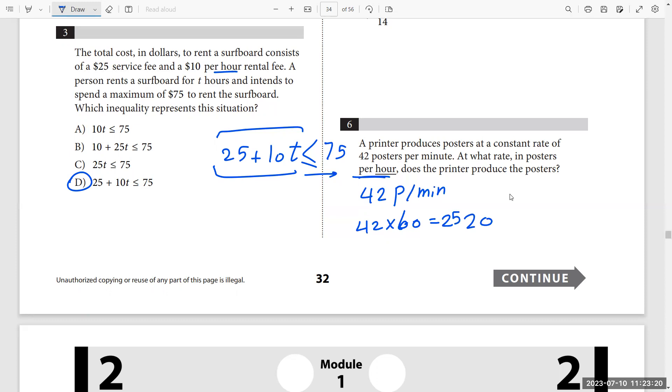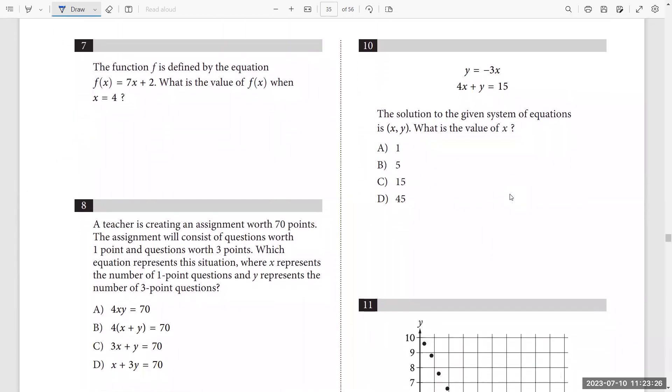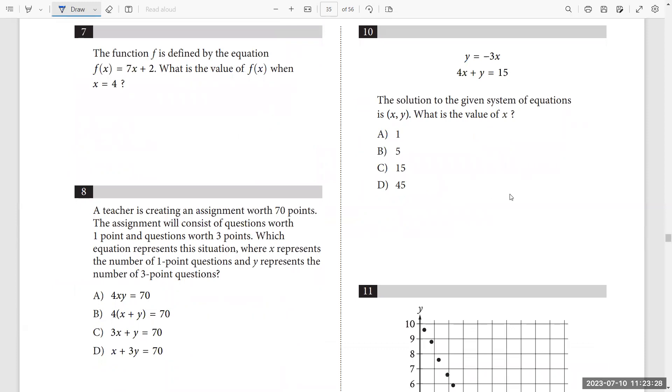Thank you so much. Question number seven. The function f is defined by the equation f of x equals 7x plus 2. What is the value of x? Well, that is quite easy. I want to find f of 4. So 7 times 4 plus 2 is equal to 30.